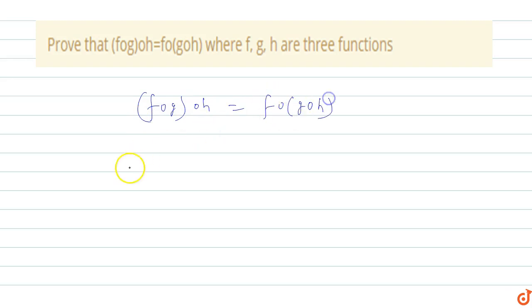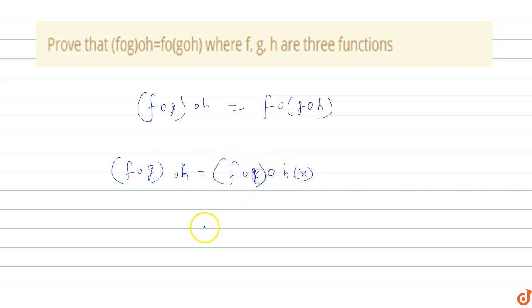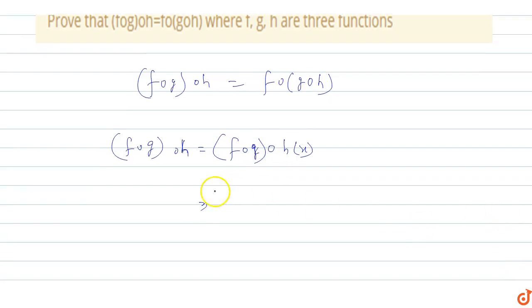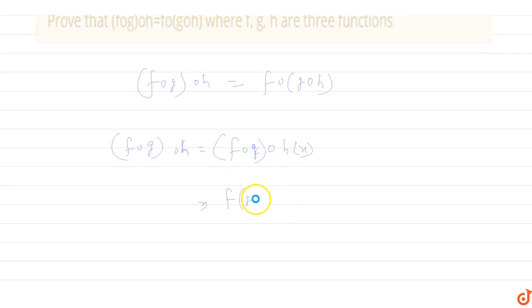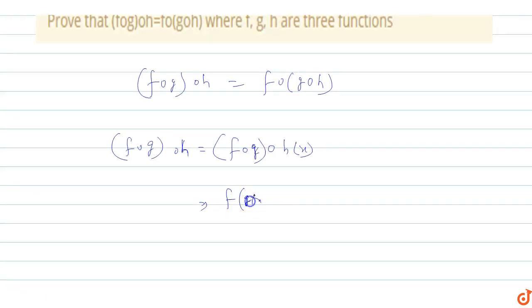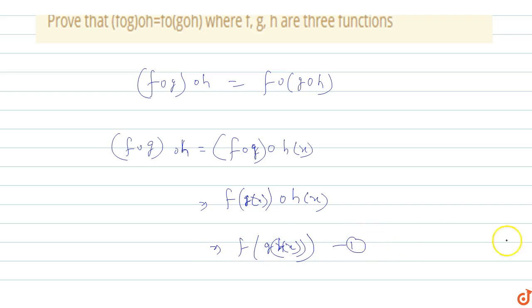Starting with the LHS: f∘(g∘h)(x). Since g∘h applied to x gives g(h(x)), we get f of g of h of x, which equals f(g(h(x))). So this is our LHS.